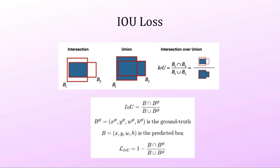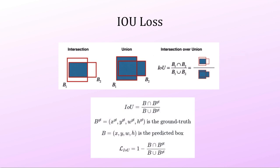Now let us see IOU losses. YOLO v4 tried CIOU and DIOU. For bounding box regression, we traditionally use smooth L1 loss. IOU loss uses intersection over union: this is computed between the ground truth box and the anchor box. IOU equals 1 for perfect overlap and 0 for no overlap. The IOU loss is simply 1 minus IOU — this represents the non-overlapping region which training should reduce to zero.